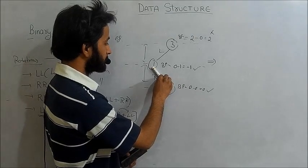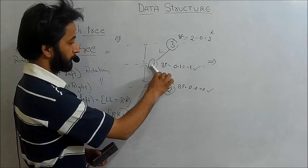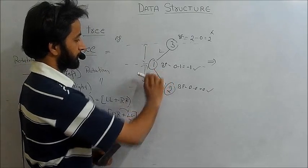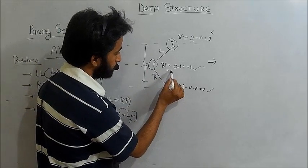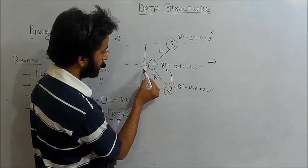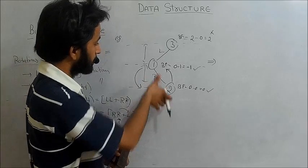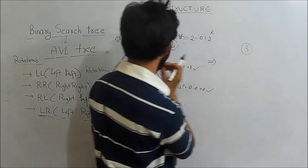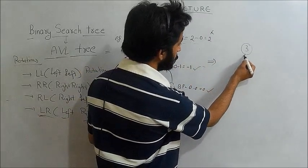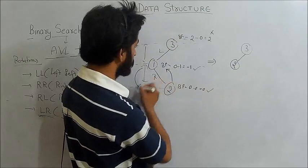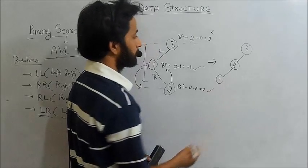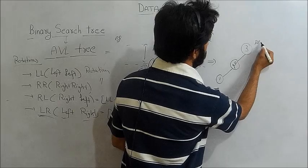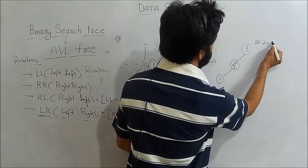In RR rotation, we move these two nodes anti-clockwise. Nodes one and two move anti-clockwise: node two comes up and node one goes down. So three stays, two moves to the higher position, and one comes down.